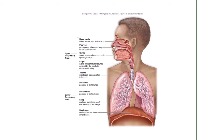Your respiratory tract starts at the nose and goes all the way to the end of the bronchial tree, separated into upper and lower respiratory tract. Everything above the trachea is considered part of the upper respiratory tract. When you have an upper respiratory tract infection like a cold or flu, you'll recover relatively quickly — maybe two weeks tops. But a lower respiratory tract infection, which includes bronchitis, tuberculosis, and pneumonia, can take upwards of a month or a few months in some cases.